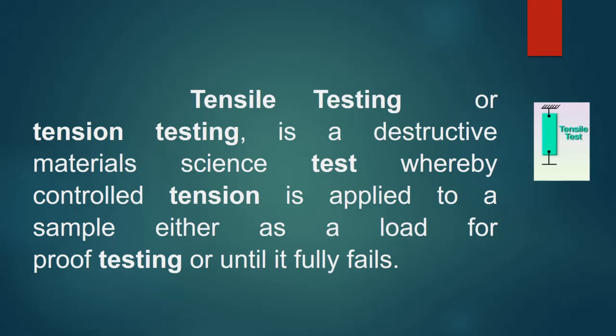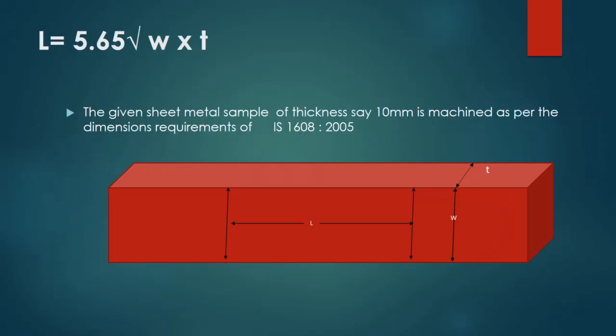Tensile testing, also known as tension testing, is a destructive material science test whereby controlled tension is applied to a sample either as a load for proof testing or until it fully fails. The specimen used in a tensile test is prepared according to standard specification. The test piece can be cylindrical or flat. The figure shows the standard dimensions of a typical flat specimen according to IS1608.